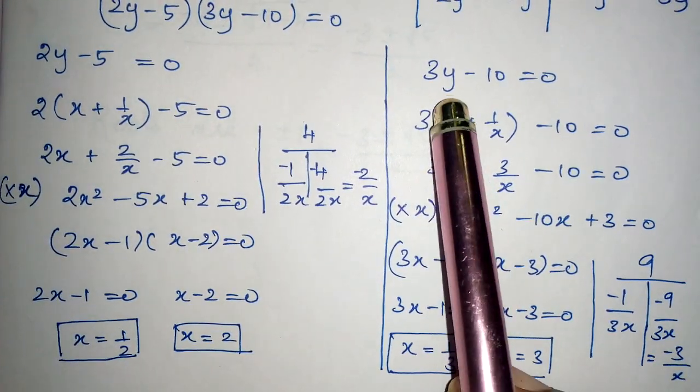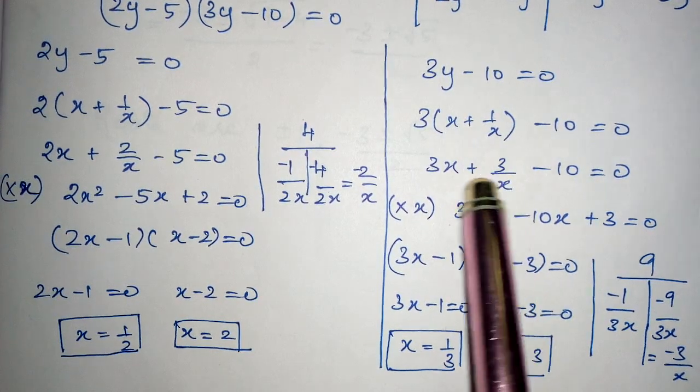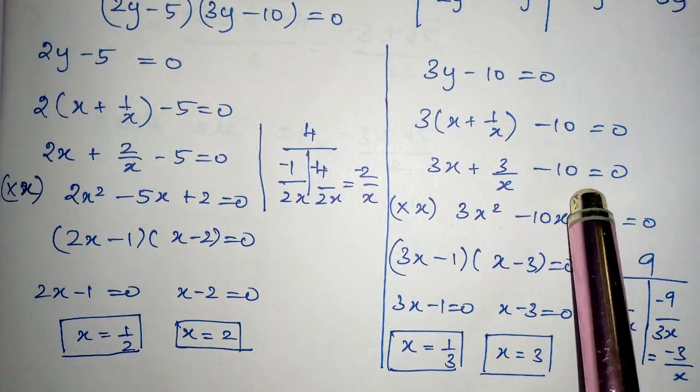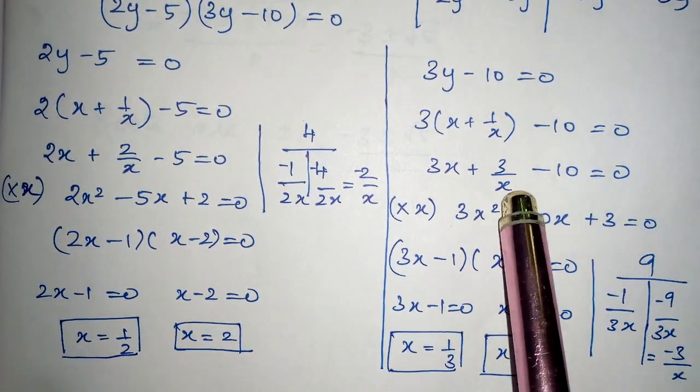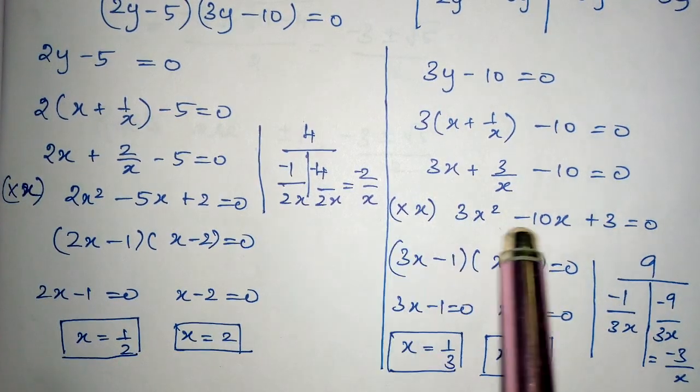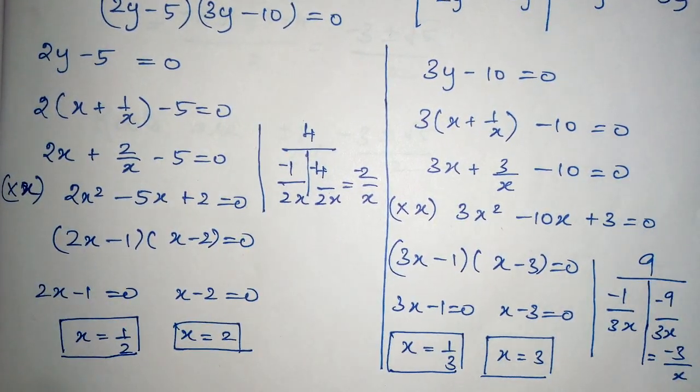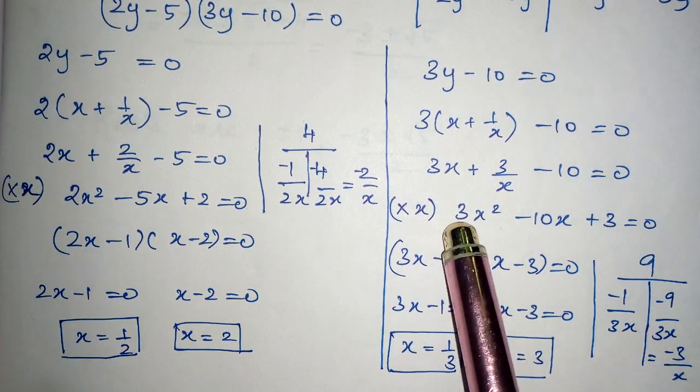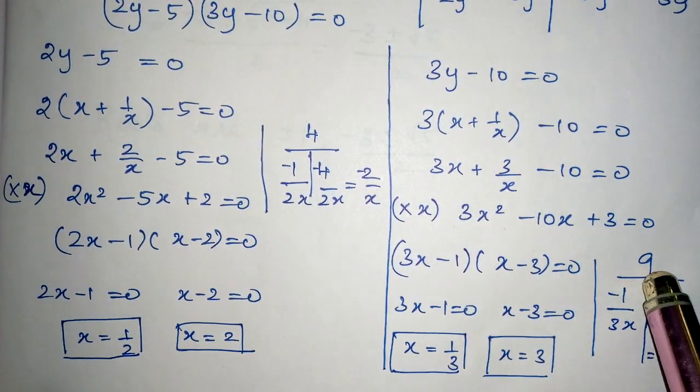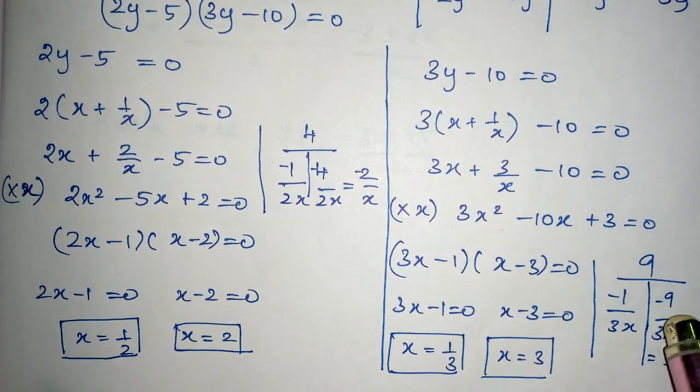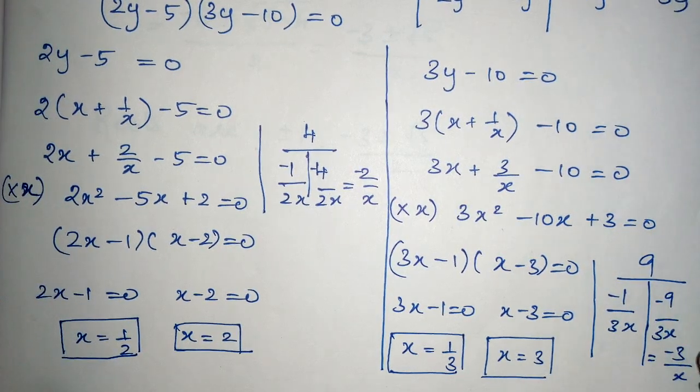Now do the same here also. Replacing y by x + 1/x: 3(x + 1/x) - 10 = 0. To remove the denominator, multiply by x, and I have got 3x² - 10x + 3 = 0, a quadratic equation. Using the T method, 3 × 3 is 9.